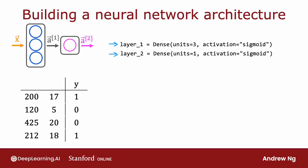instead of you manually taking the data and passing it to layer one, and then taking the activations from layer one and passing it to layer two, we can instead tell TensorFlow that we would like it to take layer one and layer two,